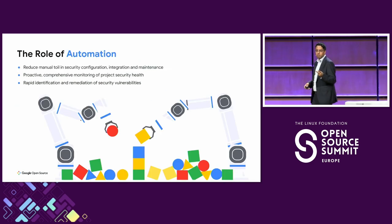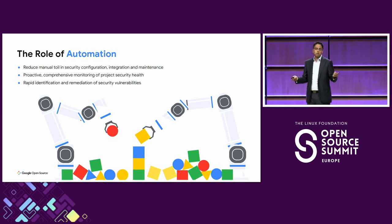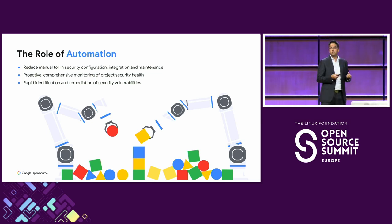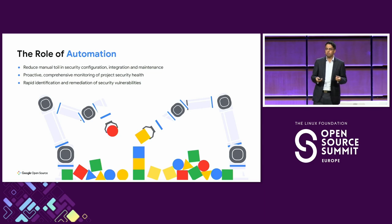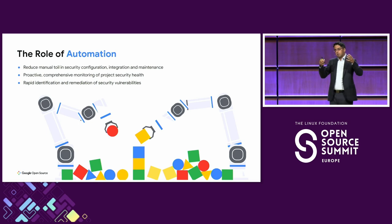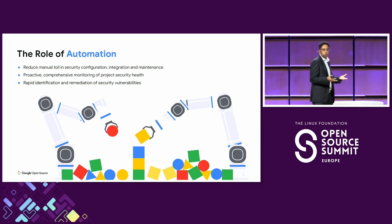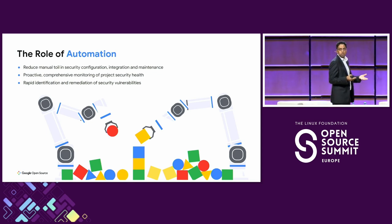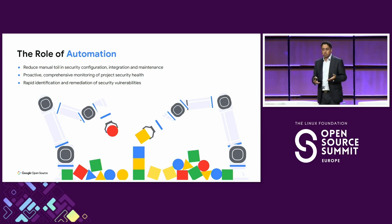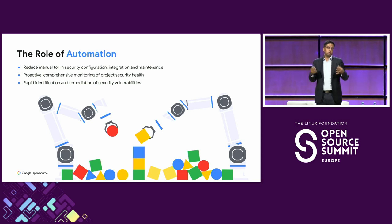The second element I will talk about today is something that is very near and dear to my heart. In fact, this has been a guiding principle for most of my work at Google: automation. We want automation to reduce the manual toil that our open source developer experiences every day. This includes the toil in managing complex security configurations, integrating new security tools, and day-to-day security maintenance work like security triage. So our ideal goal is to make all parts of the SDLC automated.